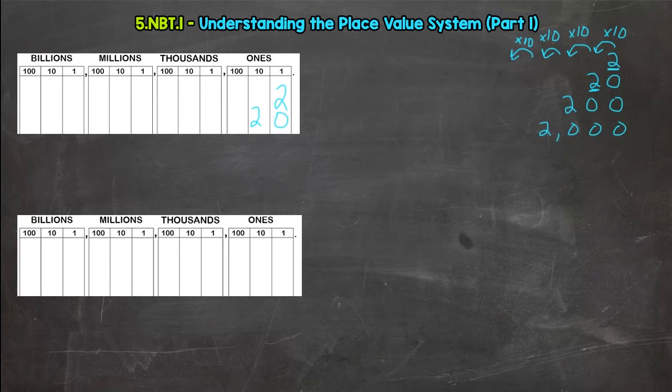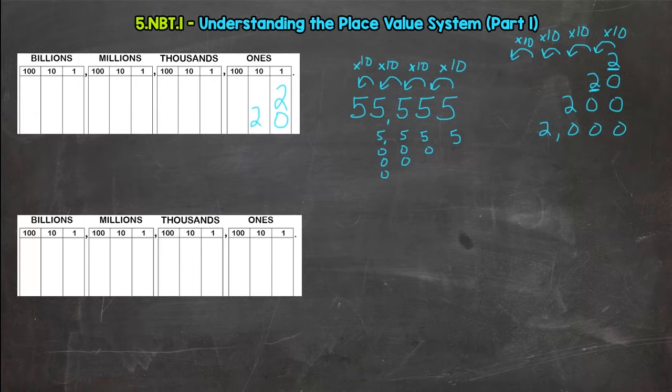I'm going to write out a number here. We'll use fives: fifty-five thousand five hundred fifty-five. This five right here, value is five. If we take a look at the place to the left, our value increases by 10. This five would be worth 50. Let's increase the value by 10 again: 500. Increase the value by 10 again, we have 50,000. Every jump to the left, the value increases by 10.